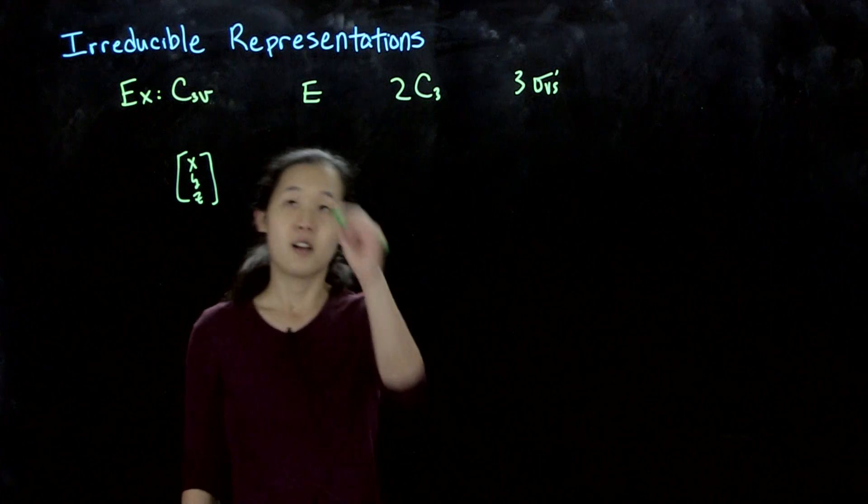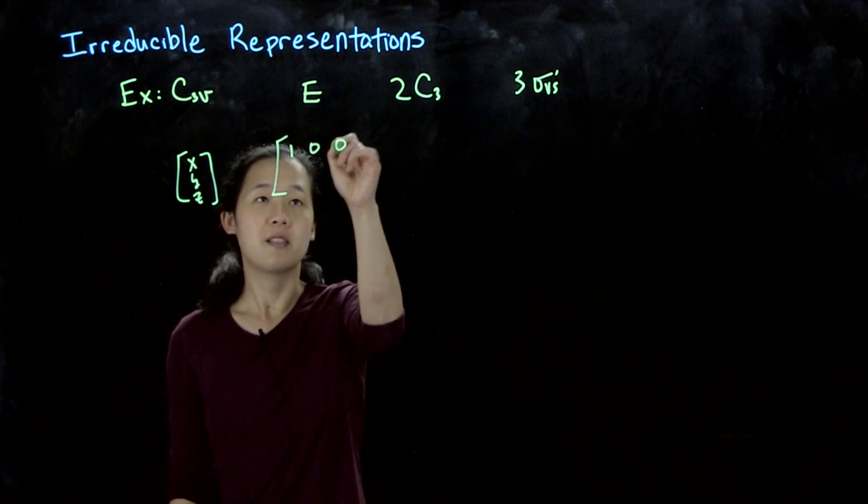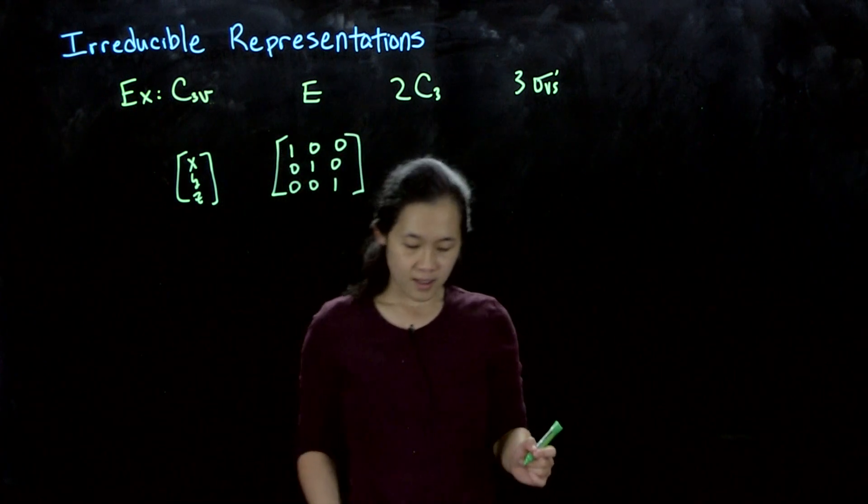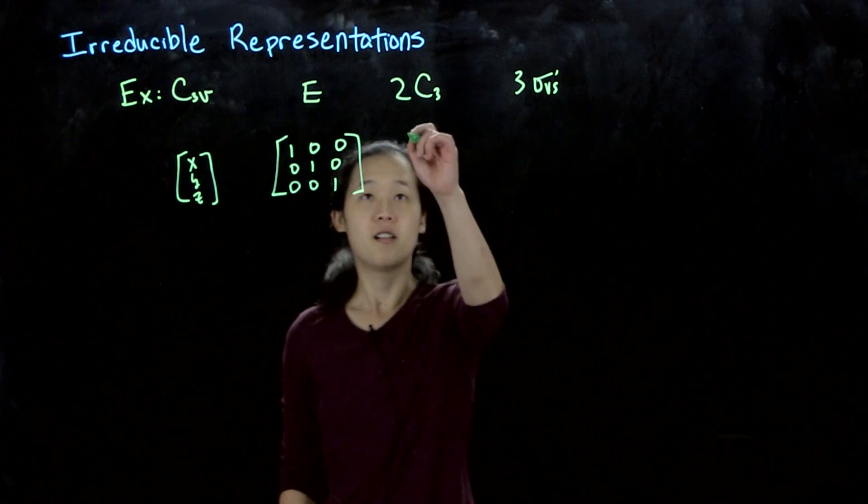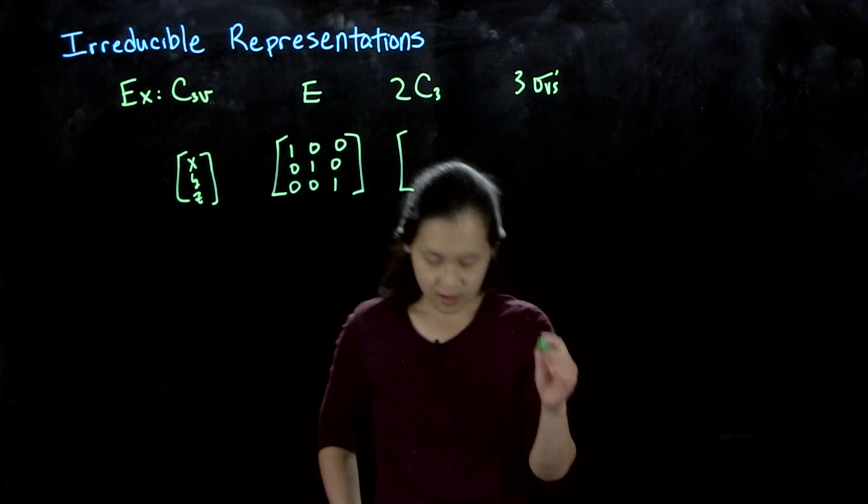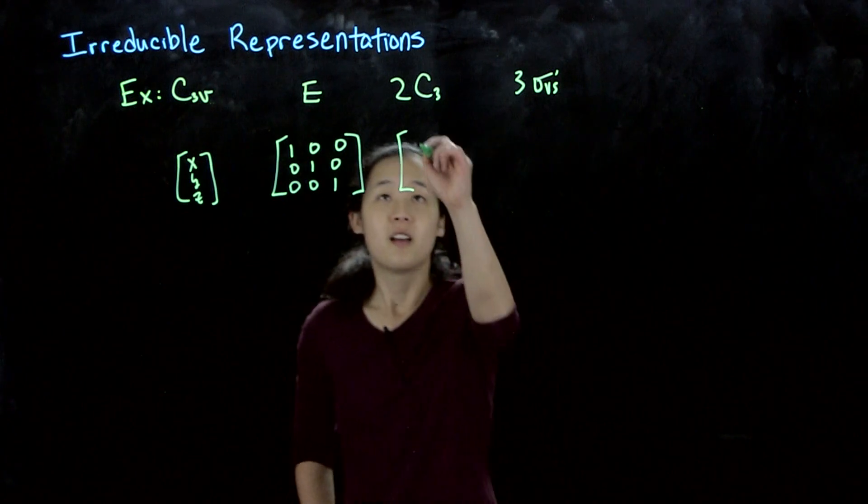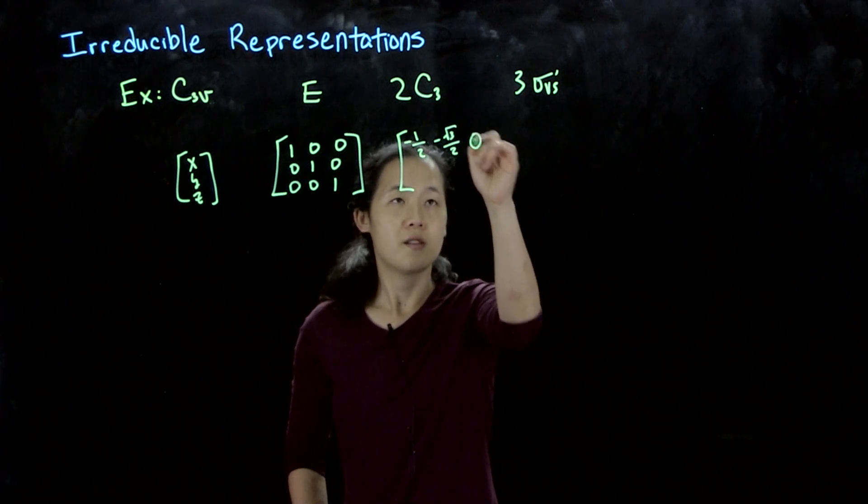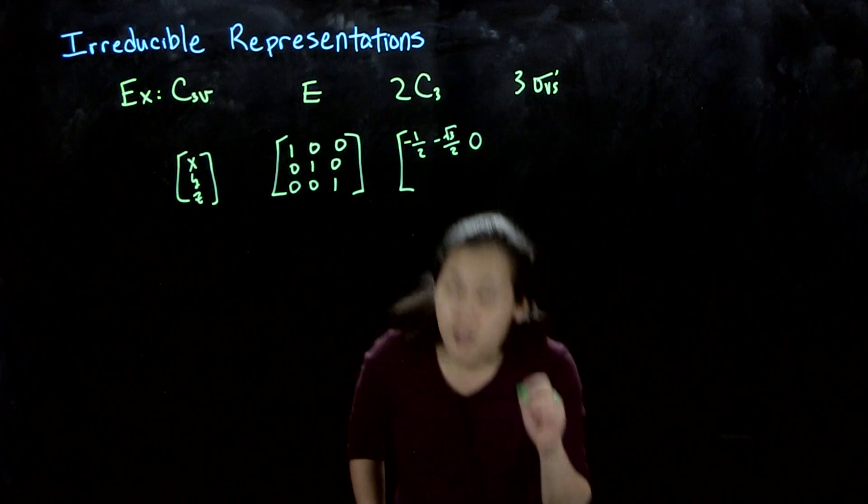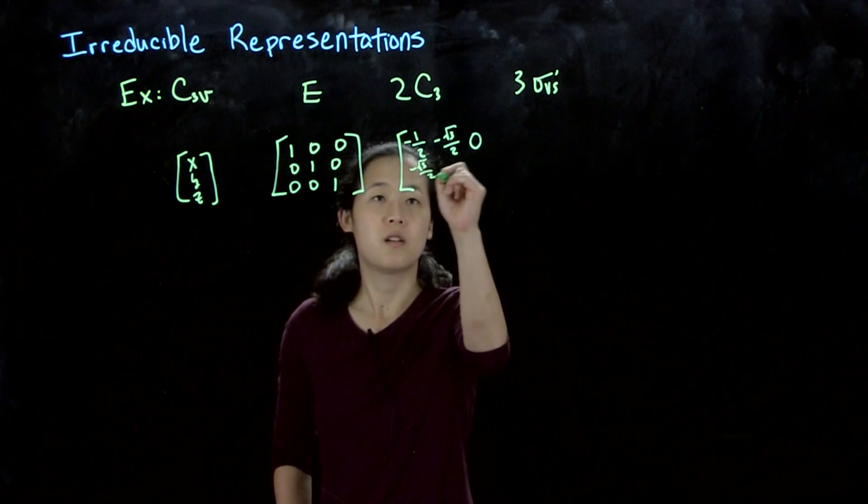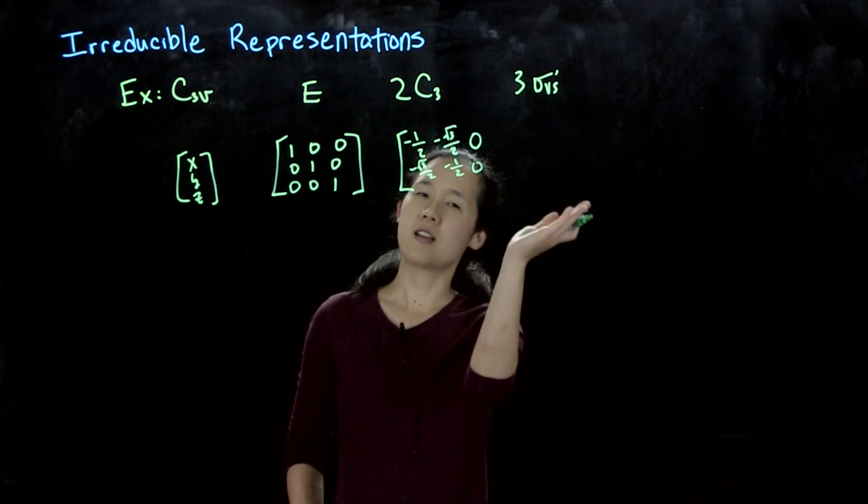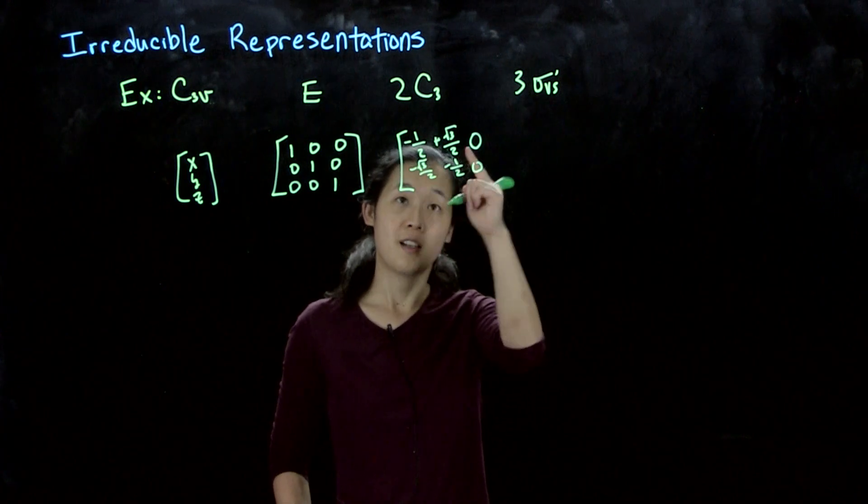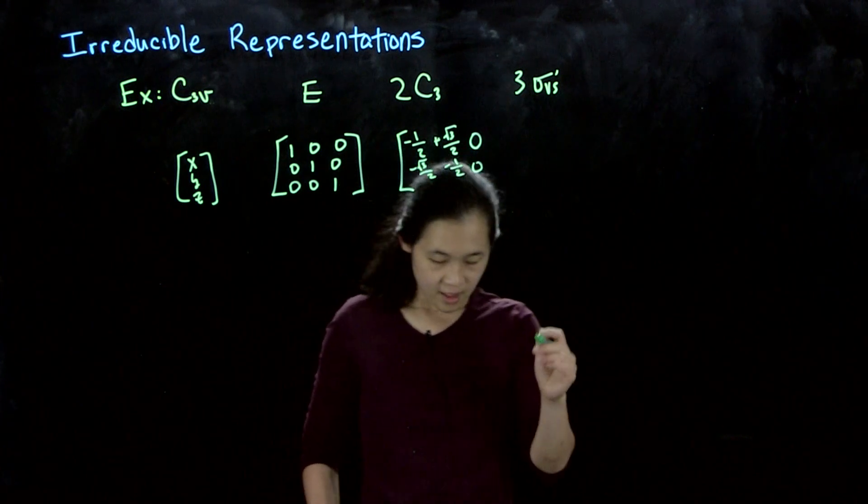We were able to find example matrices. E is always 1, 0, 0; 0, 1, 0; 0, 0, 1. I'll just show one of the C3s, because the other one is in the same class. This was the unit circle delio, so this was negative 1 half, root 3 over 2, 0; root 3 over 2, negative 1 half, 0; and then 0, 0, 1.